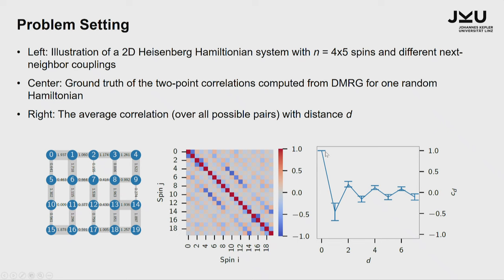You can think about what is the average correlation over all possible pairs — zero with one, zero with two, one with six, and so on — all pair combinations. For next-neighbor correlations you get a negative value because it's an antiferromagnetic system. For d equal two they are positively correlated, and so on. So you can look at these average correlations over distance d, and this is what we will later also look at.